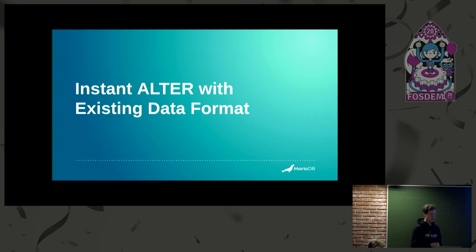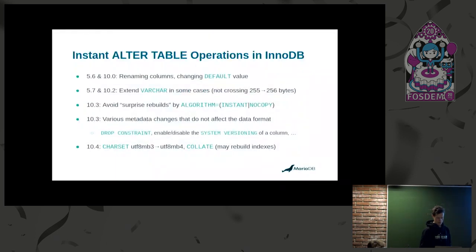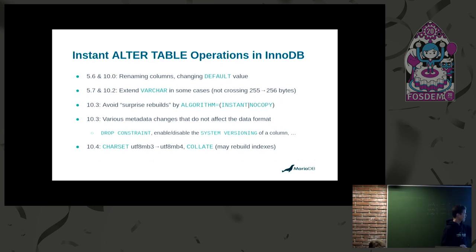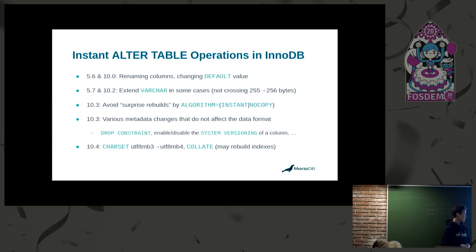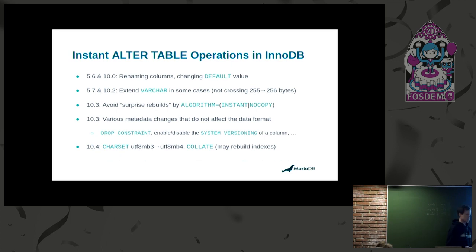The next section is about instant ALTER — what can you do without spending much time and without changing the existing data format? In 5.6 and 10.0, you could rename columns and change the default value. In 5.7, you could extend VARCHAR columns in some cases, though there is a strict limitation: extending from less than 256 bytes to at least 256 bytes is not allowed, even though it could be in some cases. That's how it is in 5.7 and 10.2.